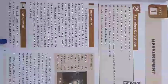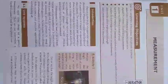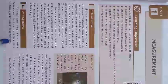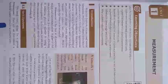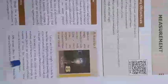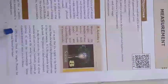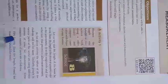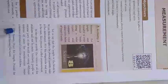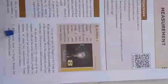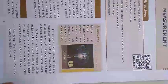First, we have the FPS system: F stands for foot (length), P stands for pound (mass), and S stands for second (time). Next is the CGS system, where we use centimeter for length, gram for mass, and second for time.